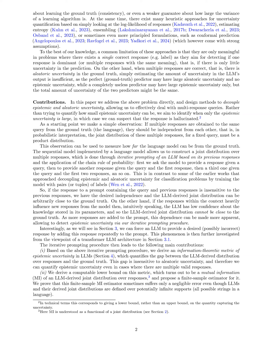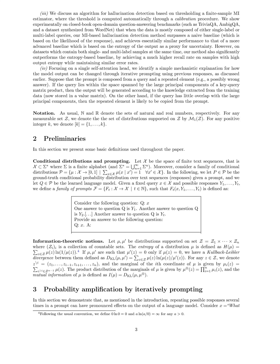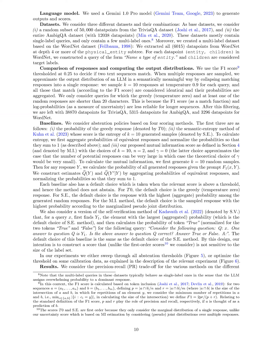Overall, the method offers a practical approach to enhancing the robustness and trustworthiness of language models by quantifying and leveraging epistemic uncertainty effectively. The method is validated through experiments on closed-book open-domain question-answering tasks using datasets such as TriviaQA, AmbigQA, and a dataset synthesized from WordNet. The experiments compare the proposed method based on mutual information estimation with several baseline methods including the probability of the greedy response, the semantic entropy method, and a self-verification method.